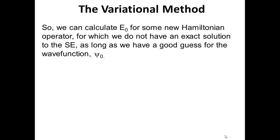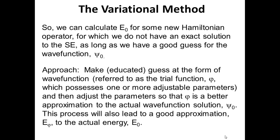We can obviously calculate what the ground state energy is if we know what the Hamiltonian is — that's not going to be a problem, since we can fairly easily write down Hamiltonians for multi-electron systems. The problem is that we can't solve the Schrodinger equation exactly. But if we have a good guess for what the wave function looks like for a new system, we can approach it differently. So we make an educated guess at the form of the wave function — this is called the trial wave function, represented by the function phi.